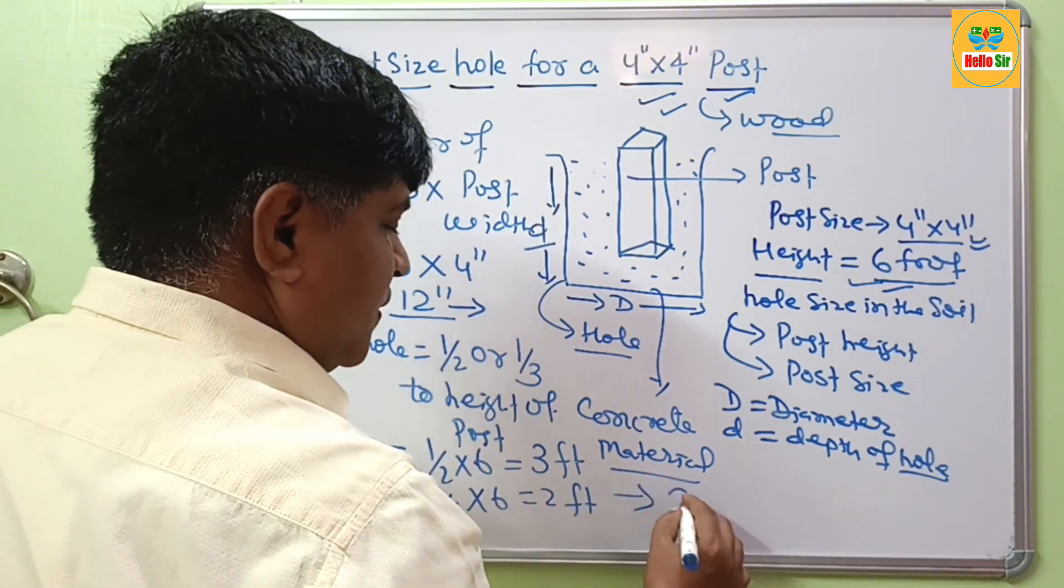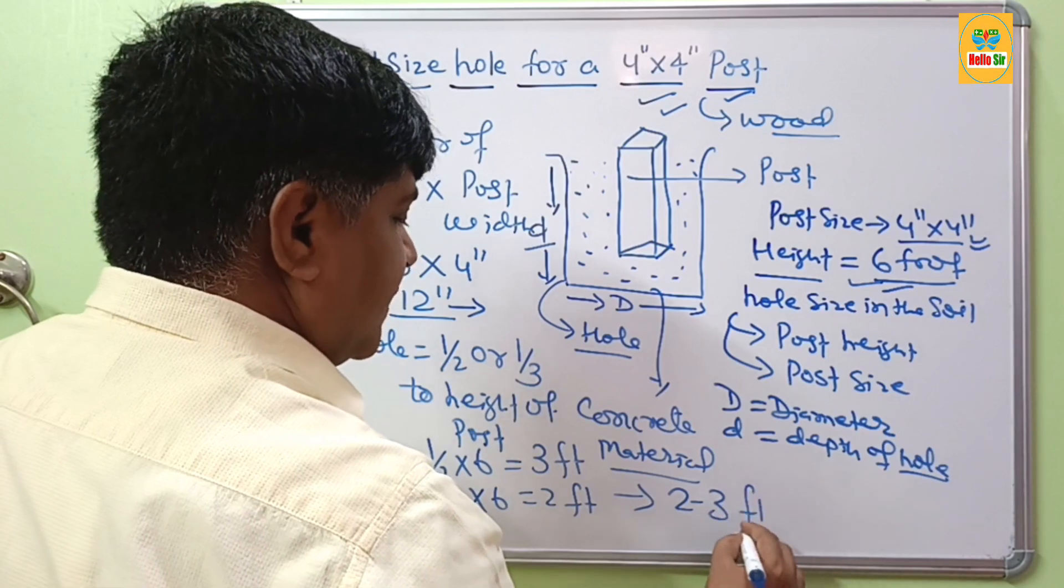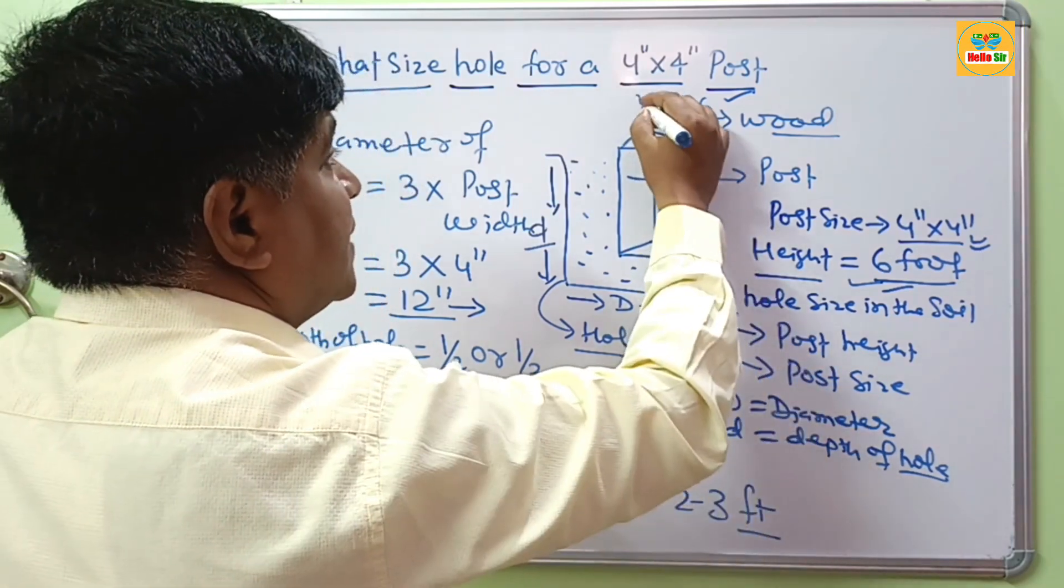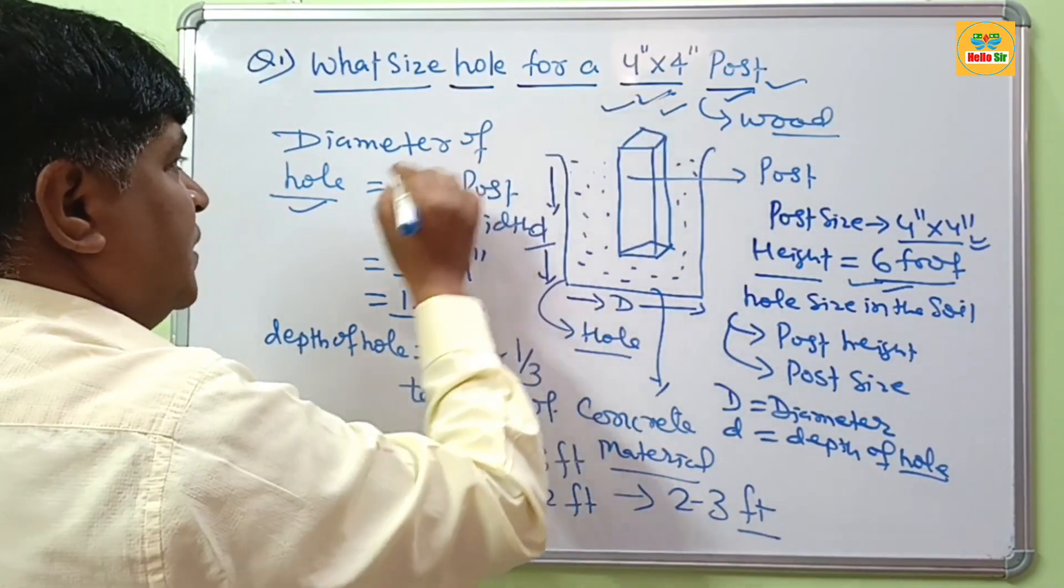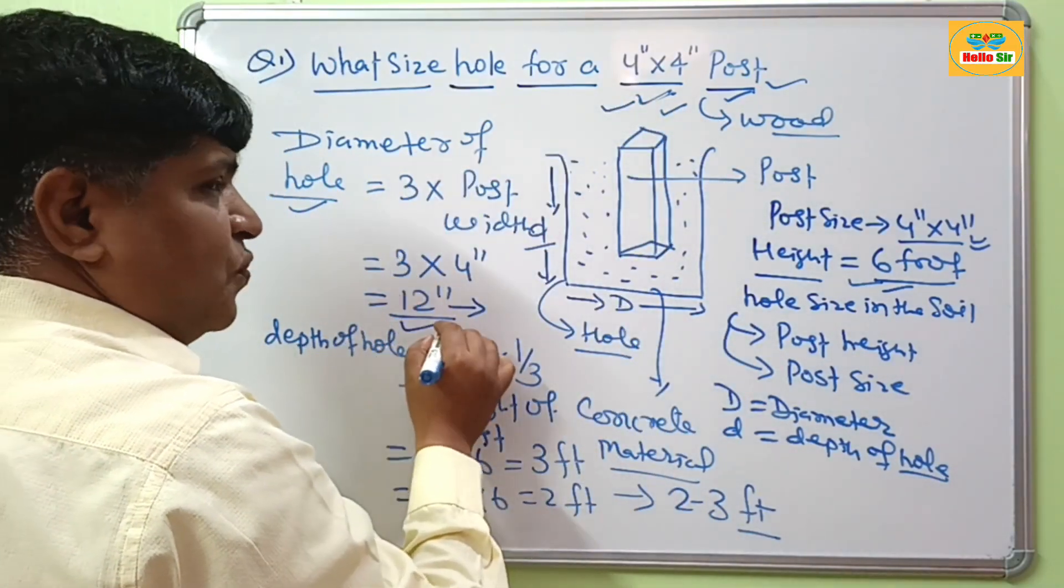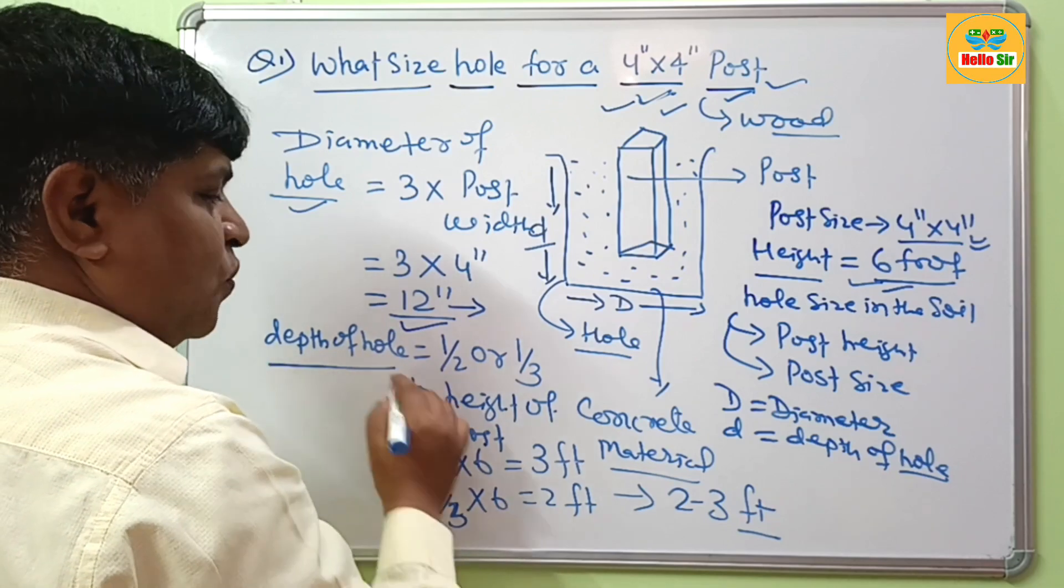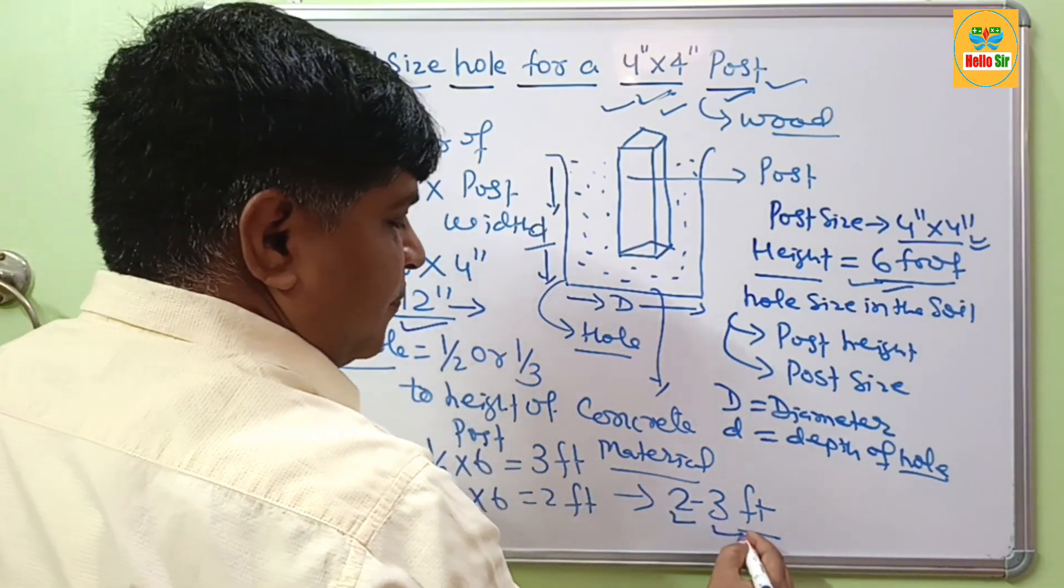It means your depth should be 2 to 3 feet deep for the size of 4 inch by 4 inch post. And if you are setting this post, your hole size requires diameter of 12 inches. And depth of the hole should be either 2 or 3 feet. Thank you.